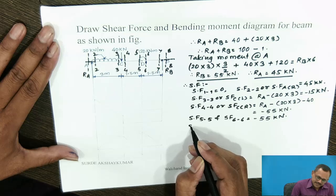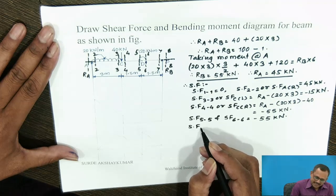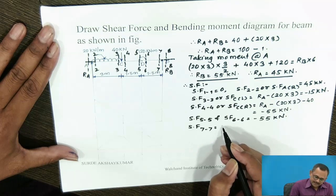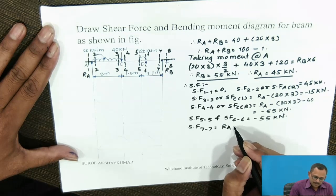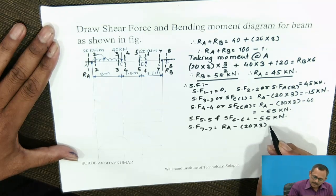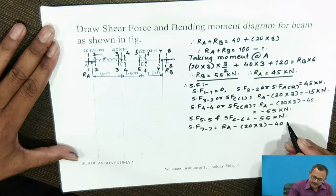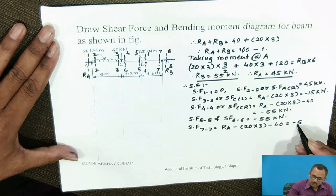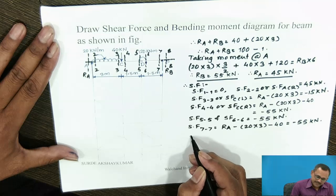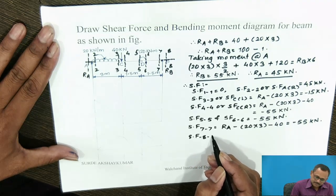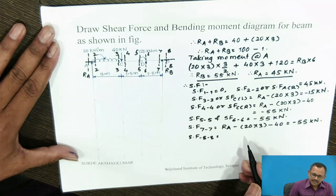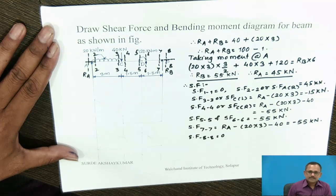Shear force at section 7-7 equals Ra minus 20 into 3 minus 40, which is again minus 55 kN. At section 8-8, there is no load to the right, so the shear force value is 0.